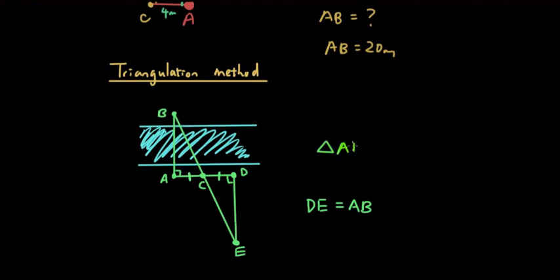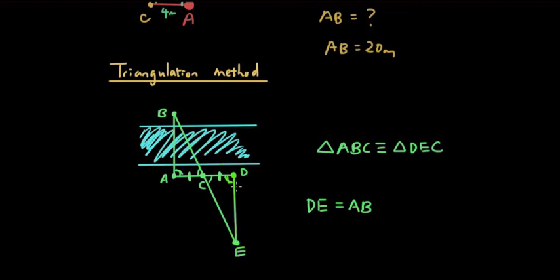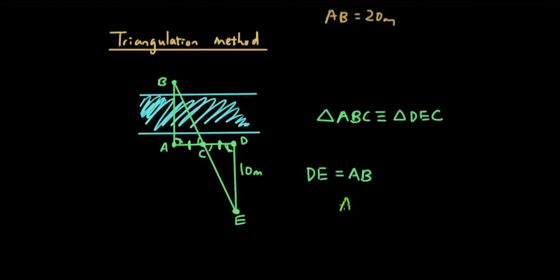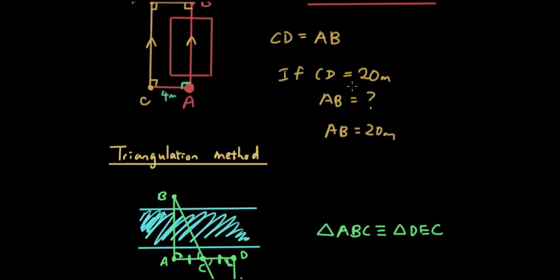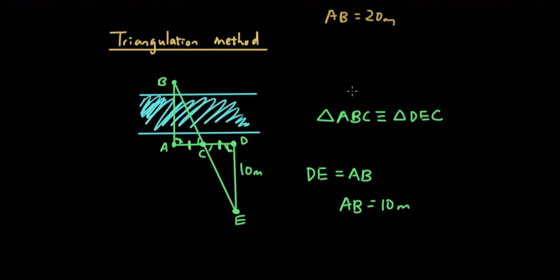Triangle ABC is congruent to triangle DEC. They are congruent because we have one side that is equal, and we have two pairs of equal angles — angle-side-angle. So the two triangles are congruent, which means side DE equals side AB. So we can simply measure DE — if that distance is 10 meters, then A to B is also 10 meters. I hope you guys now understand the triangulation method and the offset method for surveying around obstacles. See you guys next time.